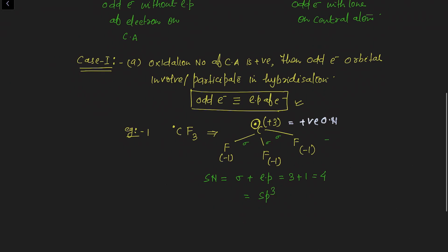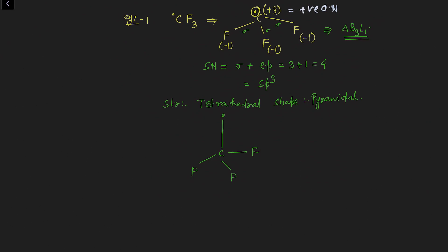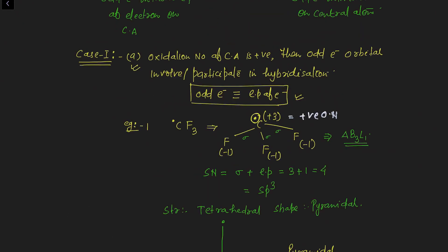Comparing with valence bond theory, this molecule behaves as an AB3L1 type molecule. In AB3L1, the structure of the molecule is tetrahedral but the shape of the molecule is pyramidal. Drawing the tetrahedral structure, the odd electron is part of the hybridization. To check the shape of the species, just hide the lone pair or odd electron part — the shape is pyramidal. This was the first part of case number one.